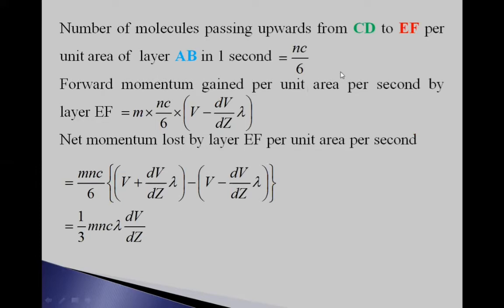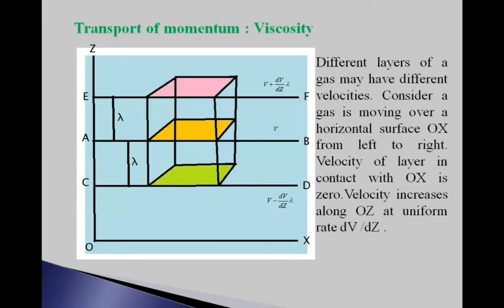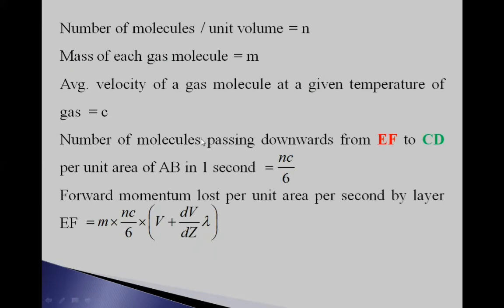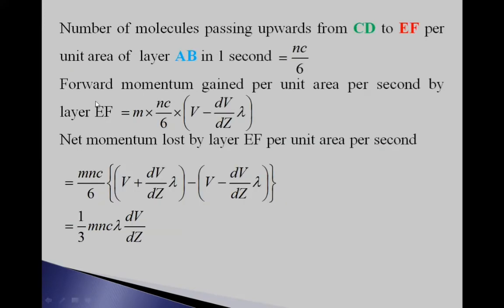The number of molecules passing upward from CD to EF layer per unit area of AB per second is also Nc/6. So the forward momentum gained by layer EF per unit area per second is M·(Nc/6)·(V − (dU/dZ)·λ). To find the net momentum lost by layer EF per unit area per second, we take the difference of these two momenta: M·(Nc/6)·[(V + (dU/dZ)·λ) − (V − (dU/dZ)·λ)].